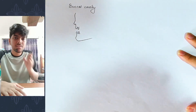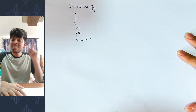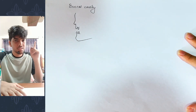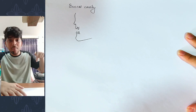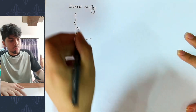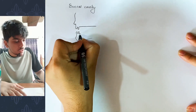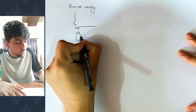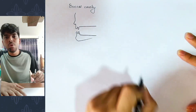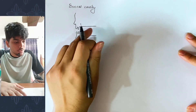Inside here is the buccal cavity — an empty room-like space. In this empty space, the top is called the roof, and the bottom is the floor — the roof is the palate and the floor holds the tongue.